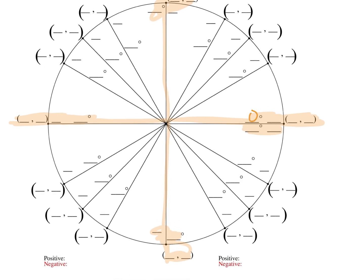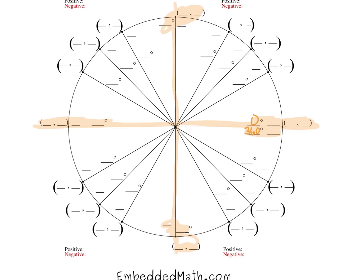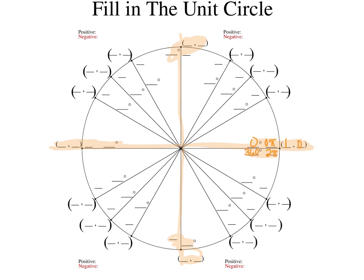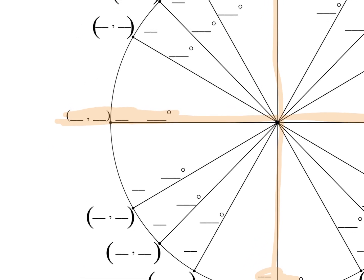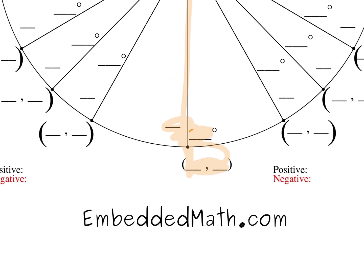We know we are at 0 degrees and 360 degrees — in radians, that's 0π and 2π — and the coordinate there is (1, 0). Up here at 90 degrees, that's equivalent to π/2 because π is 180 degrees, and if we divide by 2, we get 90. The coordinates at that point are (0, 1). Moving to the left, 180 degrees is π radians, and the coordinate is (−1, 0). Here at 270 degrees, that is equivalent to 3π/2, and (0, −1) is the coordinate.